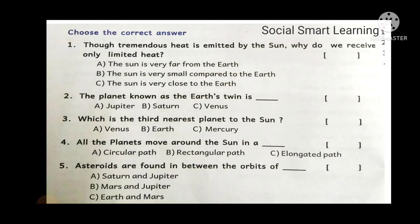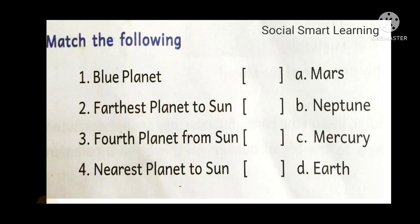Choose the right answers. Question: Tremendous heat is emitted by the sun — why do we receive only limited heat? Answer: A — the sun is very far from the earth. Next: The planet known as the earth's twin — answer is C. Third: Which is the third nearest planet to the sun? Answer is B — Earth. All the planets move around the sun in — answer is C — an elongated path. Asteroids are found between the orbits of — answer is B — Mars and Jupiter.